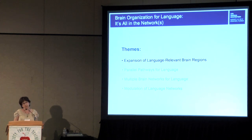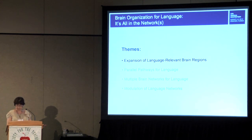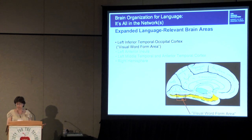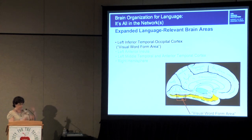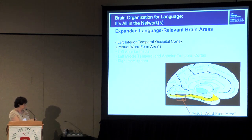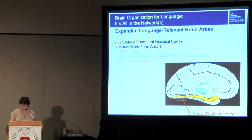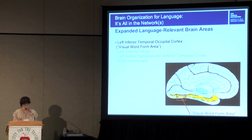What are some of these newly recognized language areas? First I want to consider an area that's clearly outside of the classical language zone, but that plays an important part in reading. Looking at the medial surface of the brain, we see a gyrus highlighted in yellow — the fusiform gyrus — in the inferior part of the temporal lobe. The posterior part of that gyrus, at the transition between temporal and occipital cortex, is sometimes referred to as the visual word form area. This has been shown to play an important role in early stages of reading.